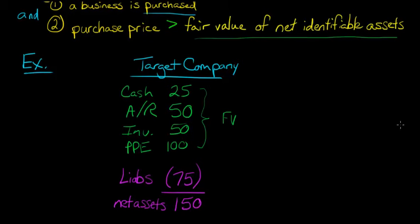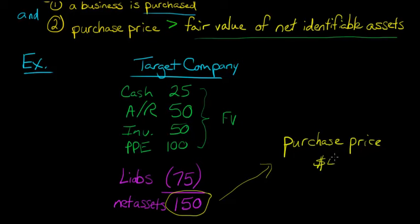So you might be thinking, well, why is this important? Well, now we need to know what is our purchase price. Because we're going to compare our purchase price to this fair value of the net identifiable assets. We're going to compare this to this. So let's say the purchase price that we end up paying is $400 for Target Company. That's what we pay to buy Target Company.